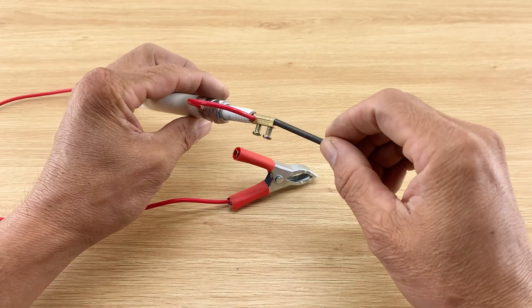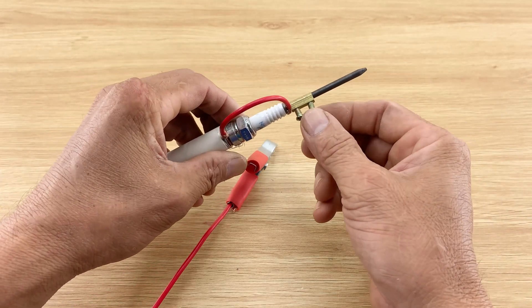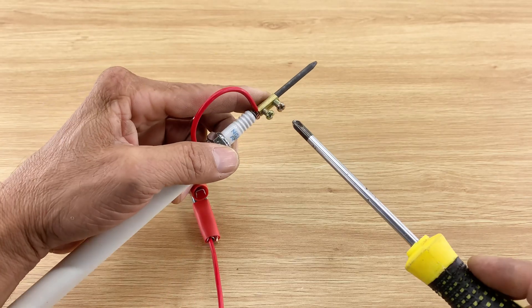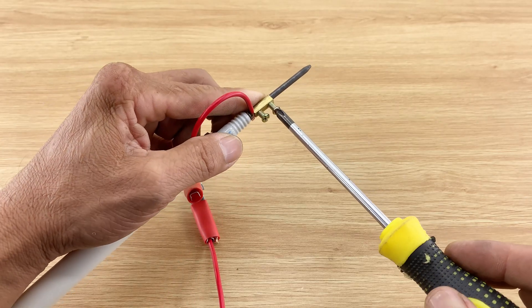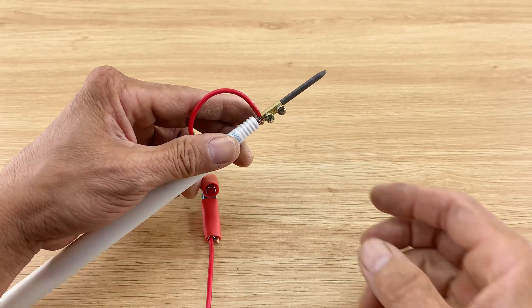With the rod sharpened, I insert it into one of the brass connectors we prepared earlier and tighten it securely with a screwdriver. This forms a solid electrical and mechanical connection.